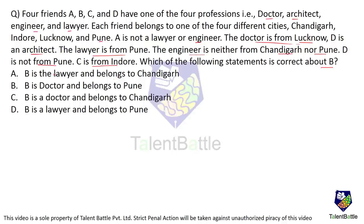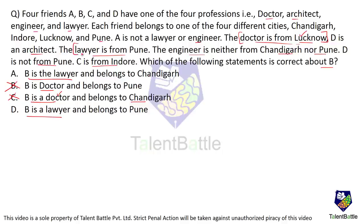Without drawing a diagram, we can mark the answer in 10 to 15 seconds. Option: B is a doctor and belongs to Pune — already given that the doctor belongs to Lucknow, so this is wrong. B is a doctor and belongs to Chandigarh — also wrong because the doctor belongs to Lucknow. So B is the lawyer. B is the lawyer and belongs to Chandigarh — but the lawyer is from Pune, so that is cancelled. Answer is option D: B is a lawyer and belongs to Pune.